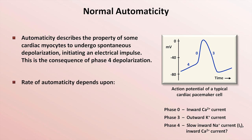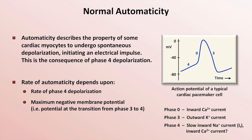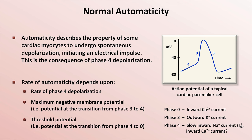The rate of automaticity depends upon three factors. First, the rate of phase IV depolarization — the faster phase IV depolarization occurs, that is, the steeper that part of the curve is, the more frequent the triggered action potentials will be. Next is the maximum negative membrane potential, which is the potential at the transition from phase III to phase IV. And finally, the threshold potential at which an action potential is fired, which is at the transition from phase IV to 0.